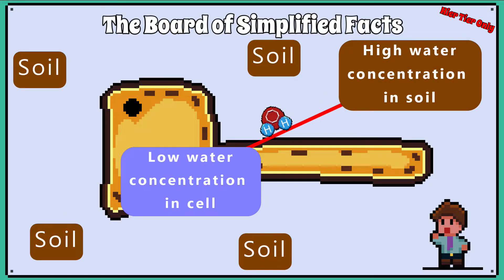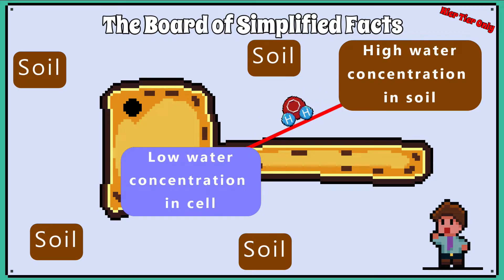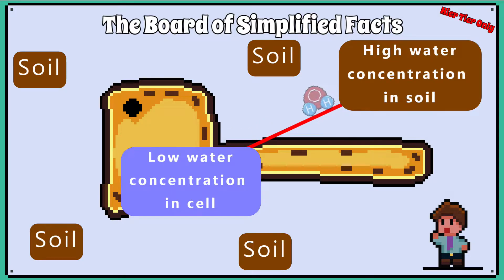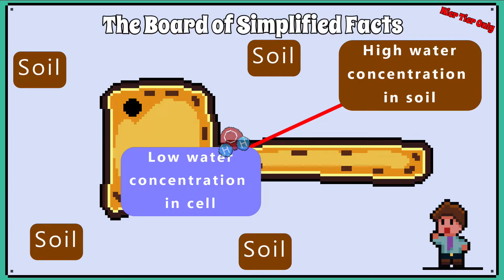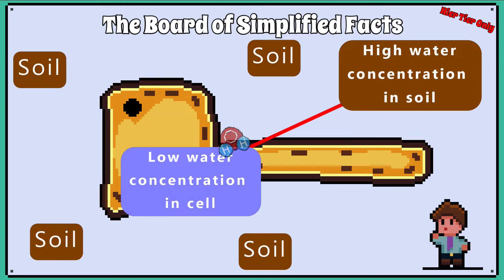Now osmosis can occur, where water moves down a concentration gradient. Water moves from where it is in a high concentration — which is the soil — into the root hair cell, which is a region of low water concentration, and the water diffuses across a selectively permeable membrane. Water then moves into the xylem, so water and some dissolved mineral ions can be transported to other parts of the plant.